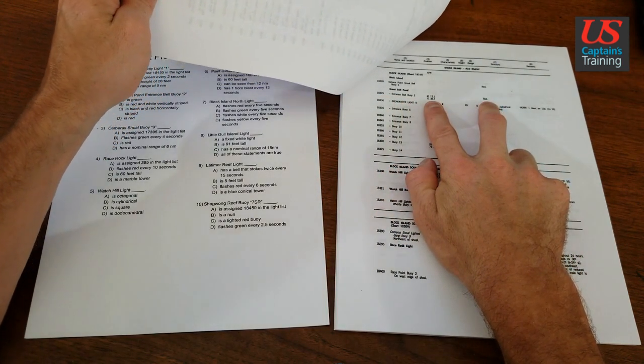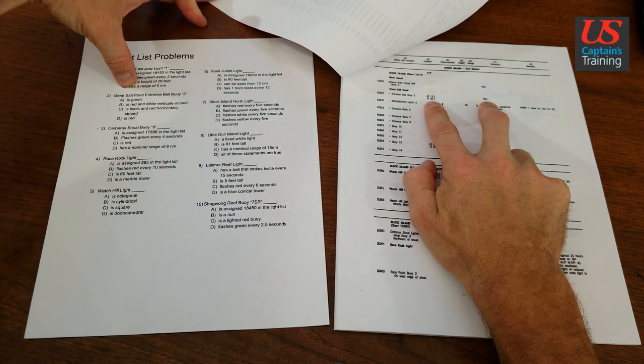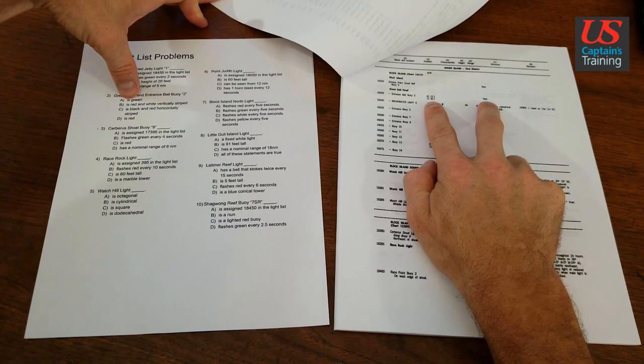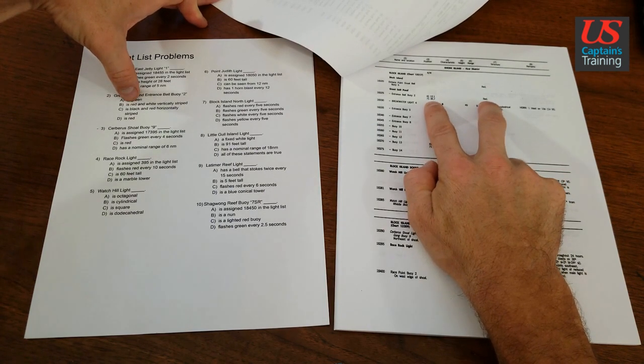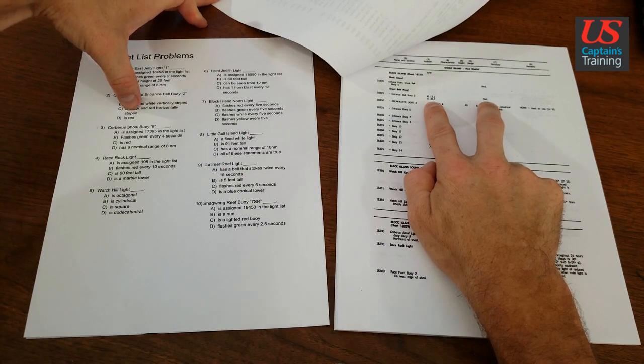We're really not given that much information here, but let's look at the answers. Great Salt Pond Entrance Bell Bowie 2 is green? No, we're seeing it's red. Is red and white vertically striped? No, it's red. Is black and red horizontally striped? No, it's red.